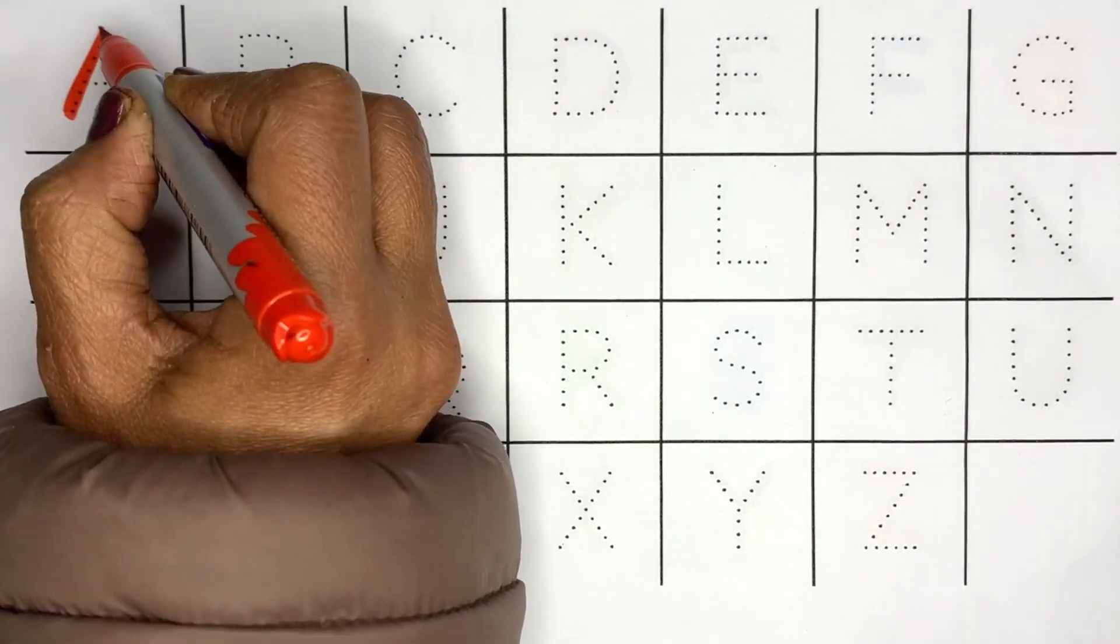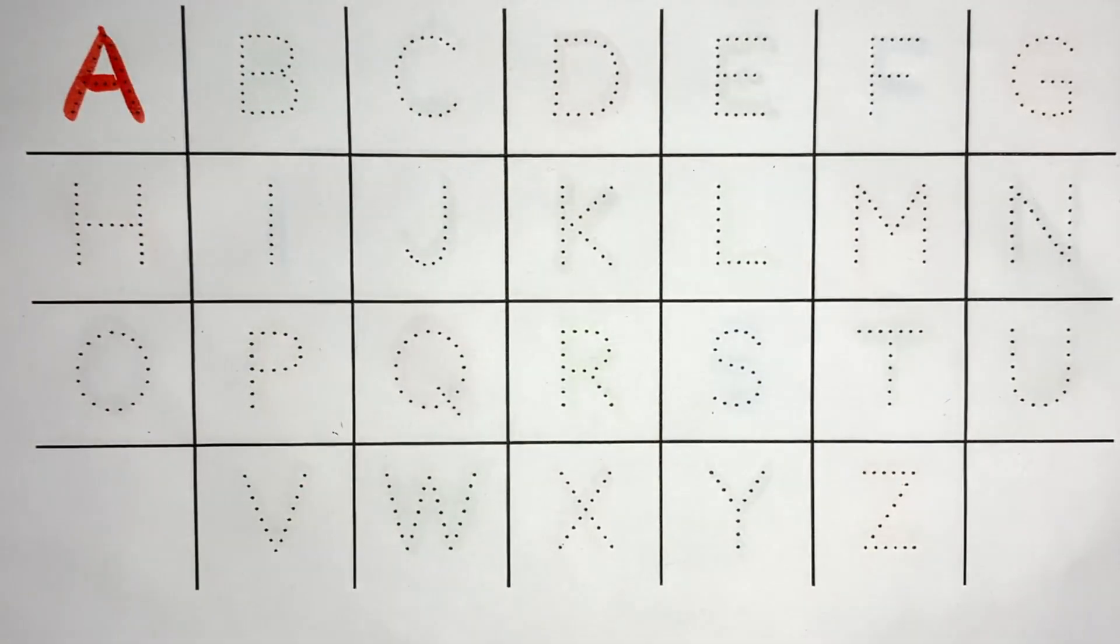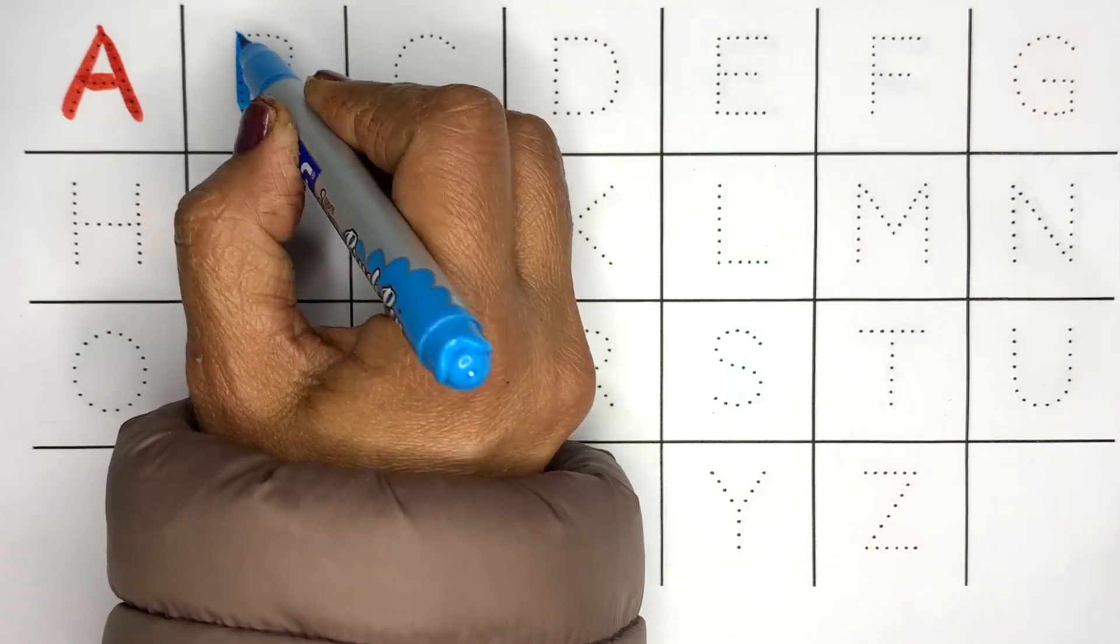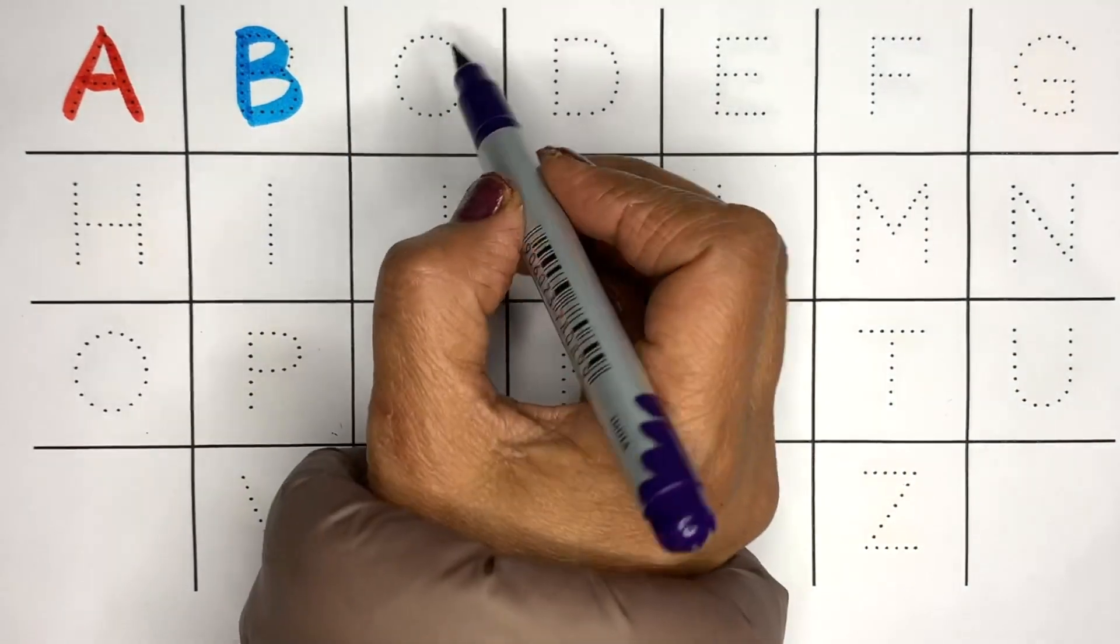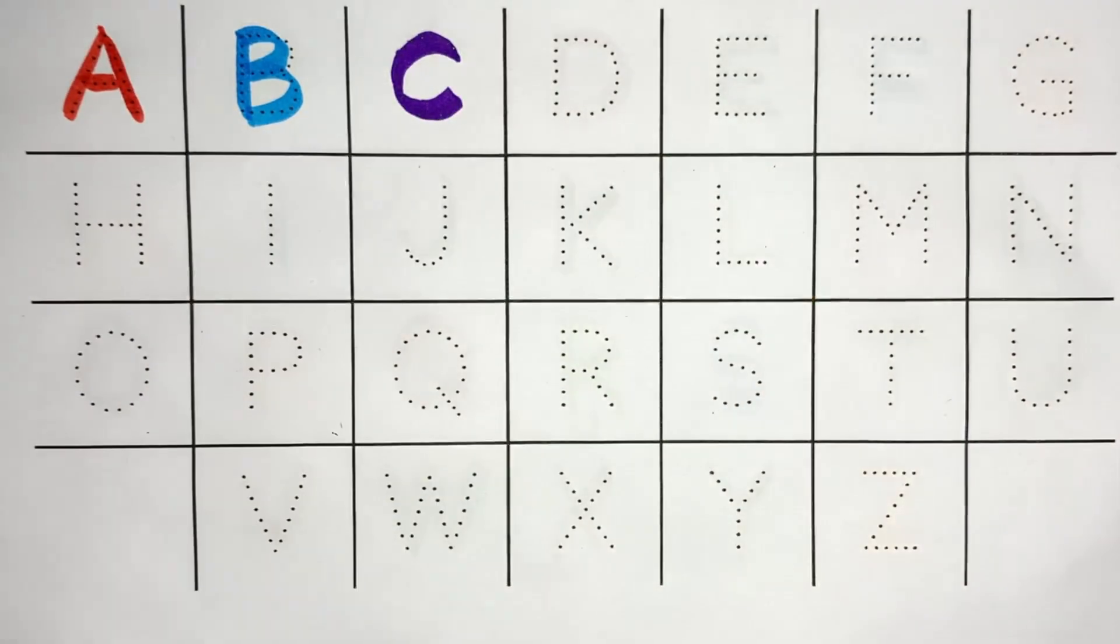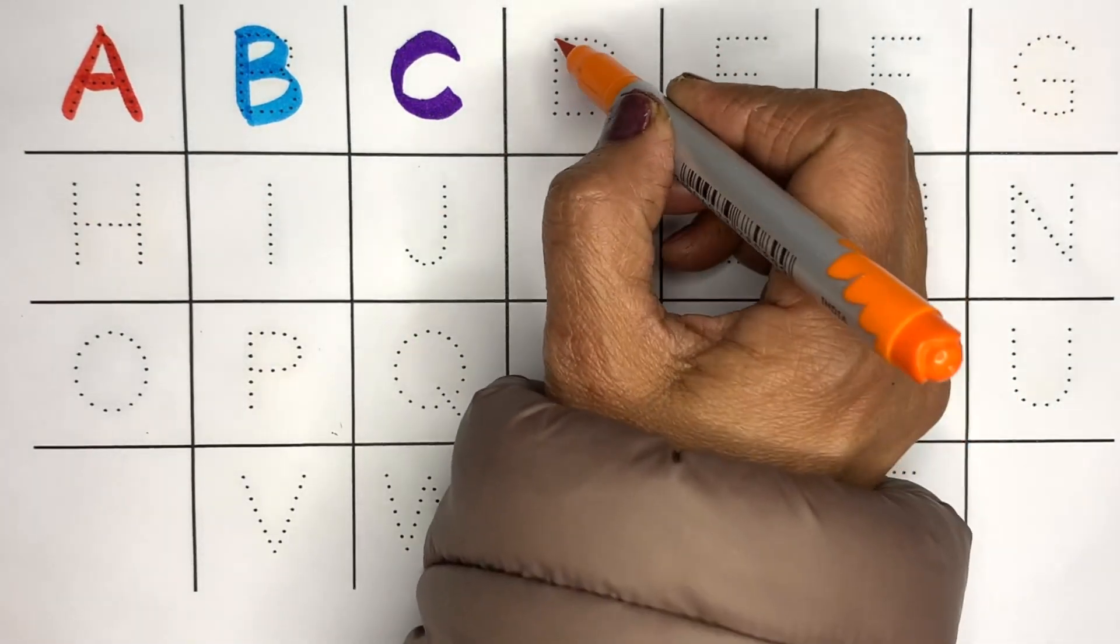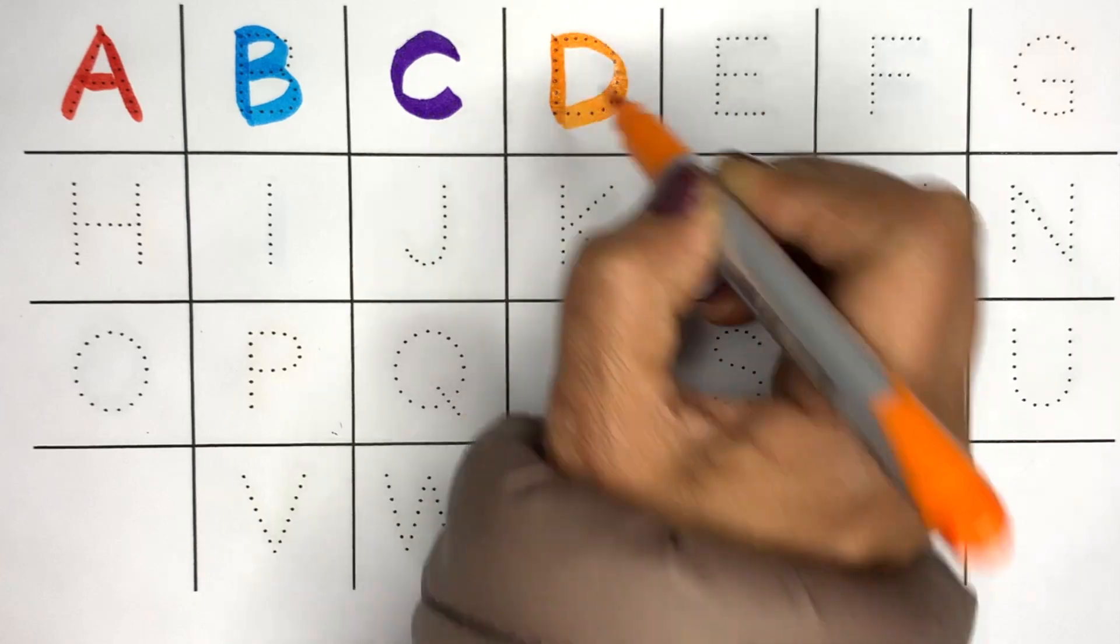A. A for apple. B. B for ball. C. C for cat. D. D for dog.